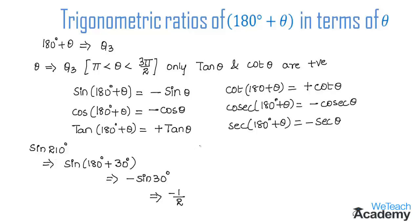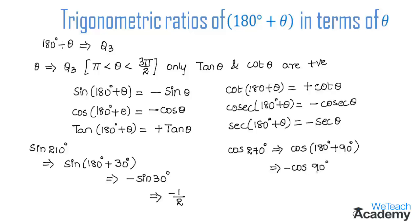The next example is: find the value of cos 270 degrees. We write cos 270° as cos(180° + 90°). Using the formula cos(180° + θ) = −cos θ, we get −cos 90°. Since cos 90° = 0, we get −0, which equals 0. So cos 270° = 0.